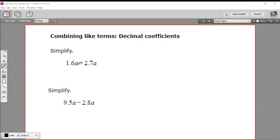So here we have 1.6a plus 2.7a. The a's are the same, so these are like terms. When the letters and their exponents are the same, you have like terms.